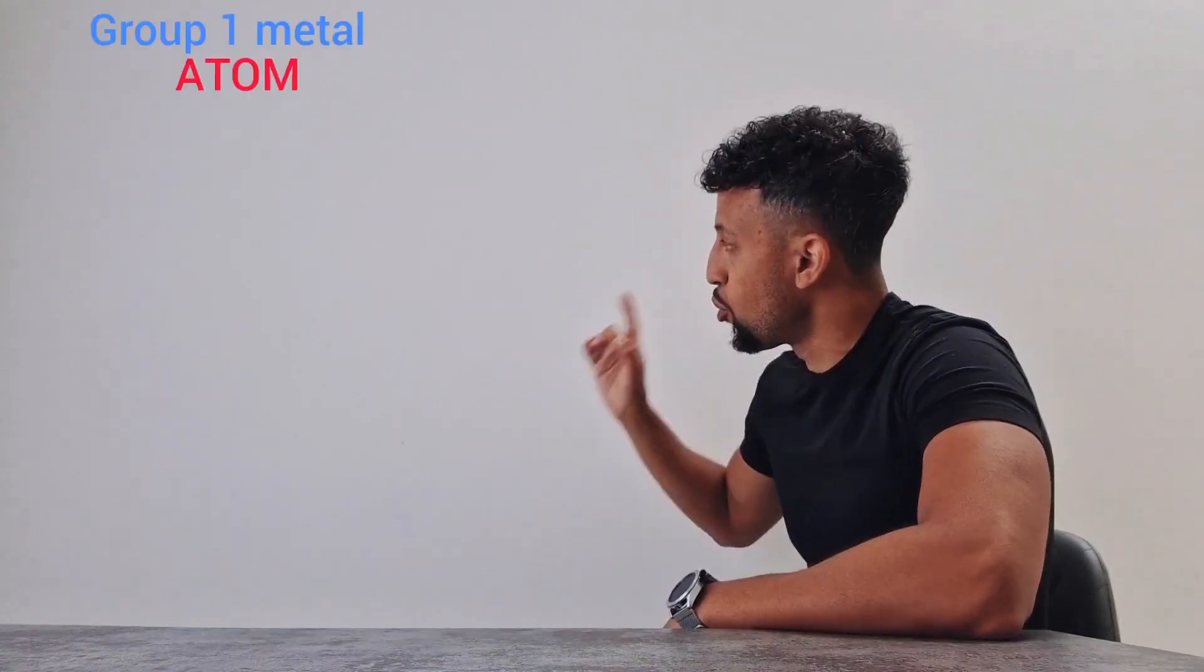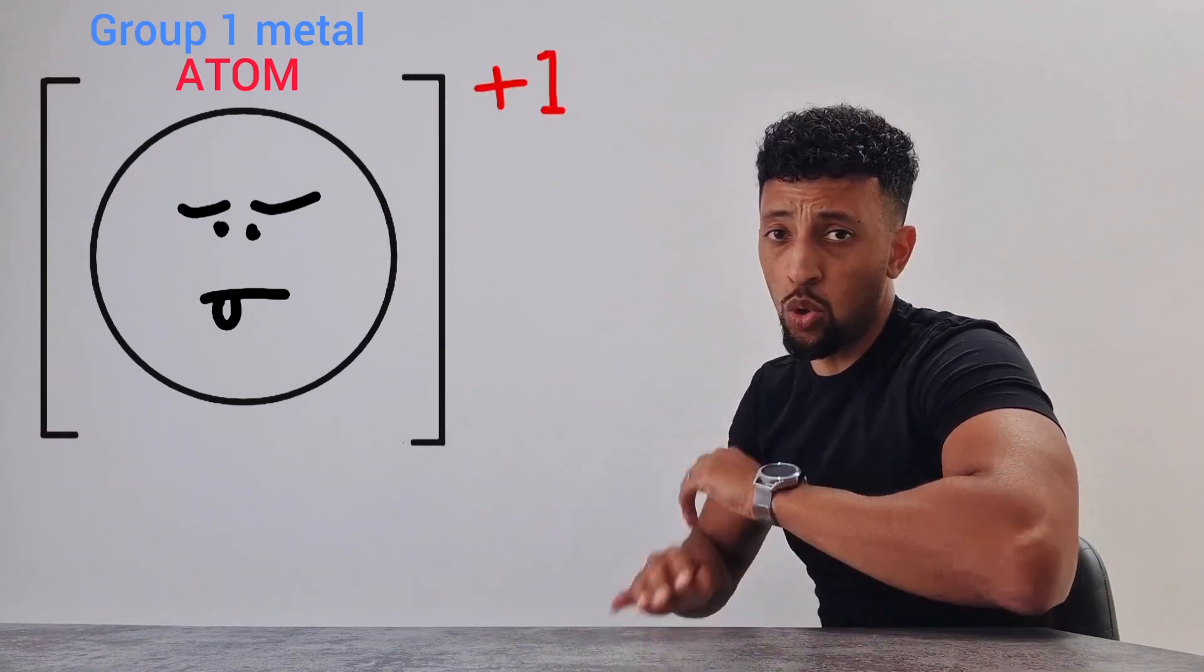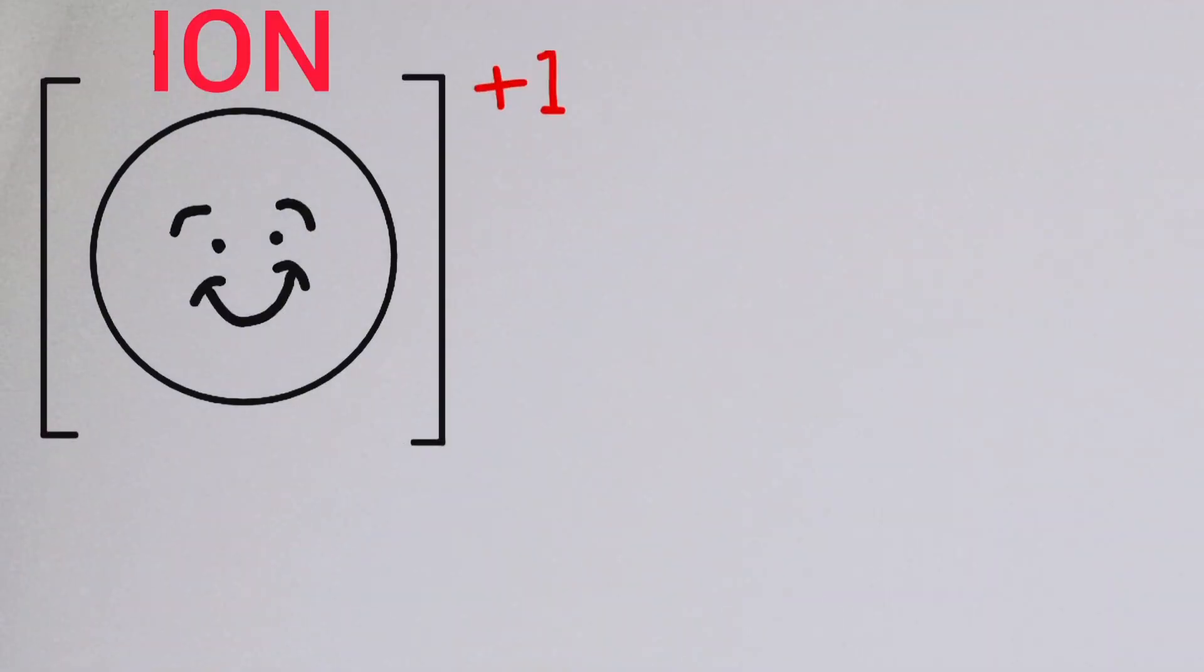In group one that really ain't that long. What it's got to do is lose one electron. Charges change zero to plus one. It's no longer an atom, it's an ion.